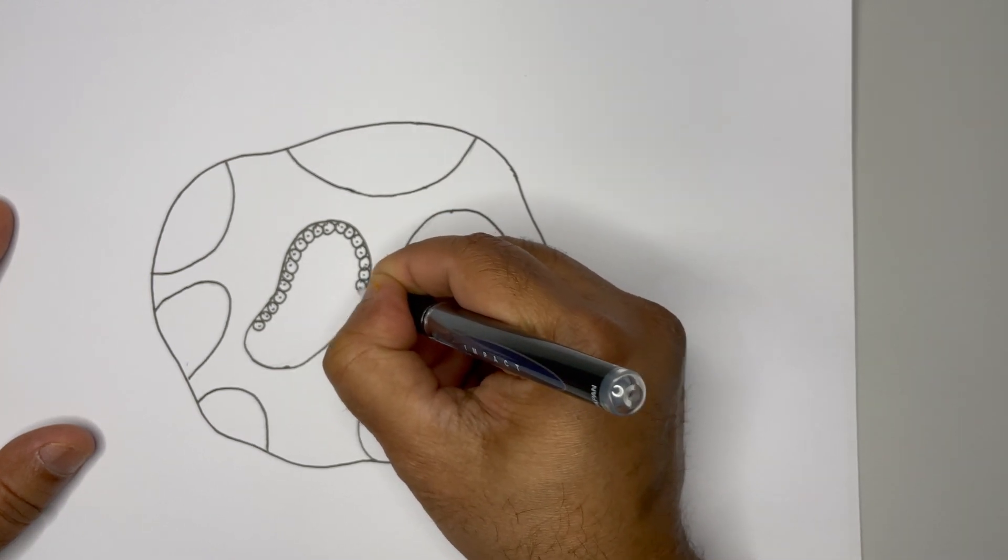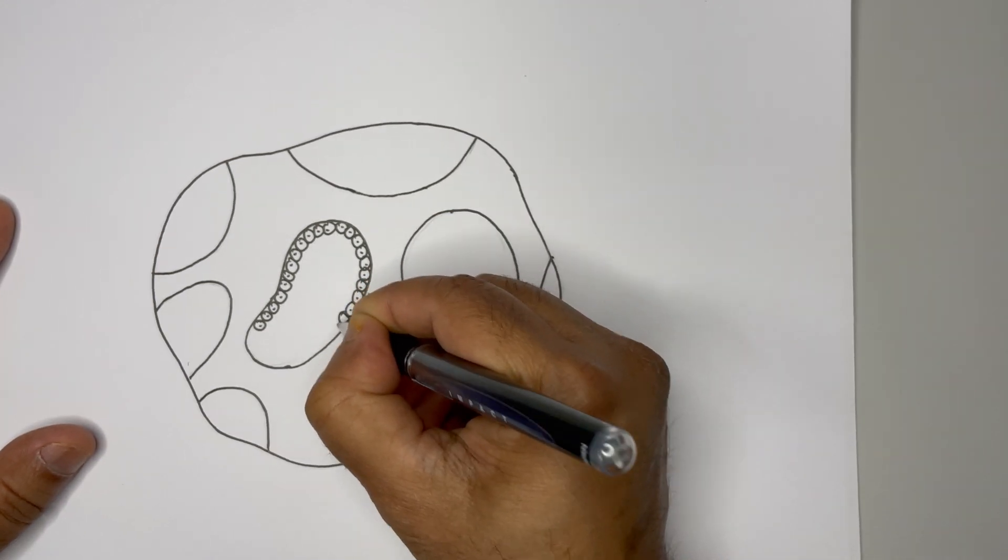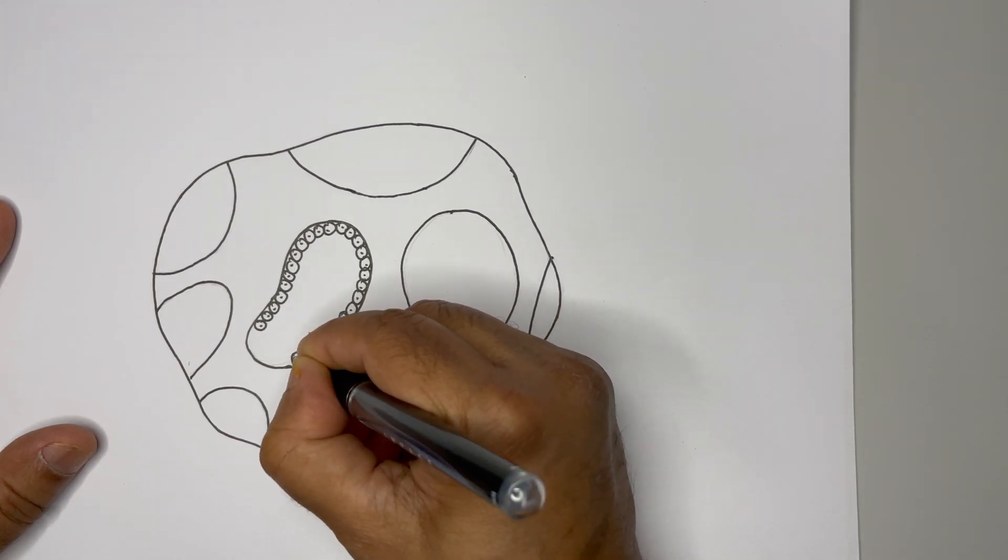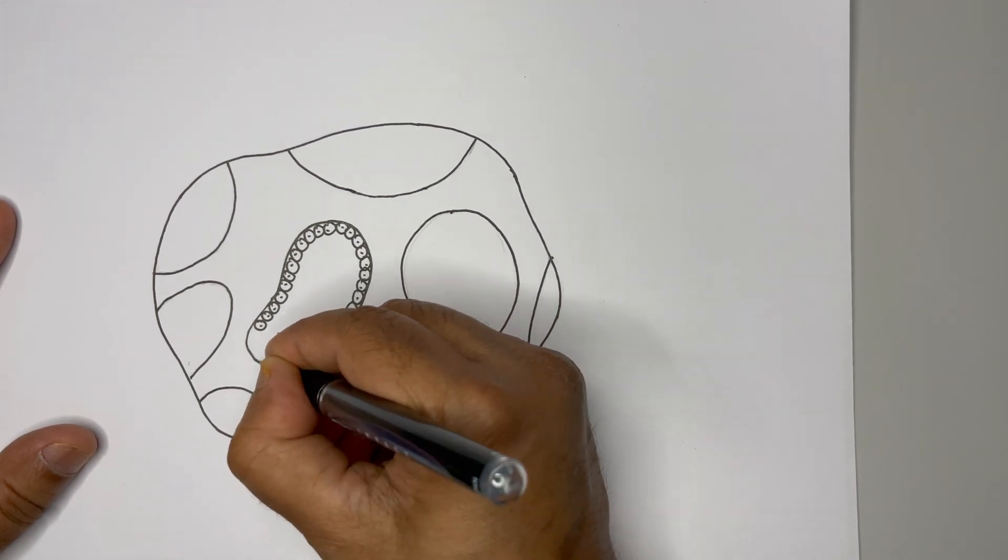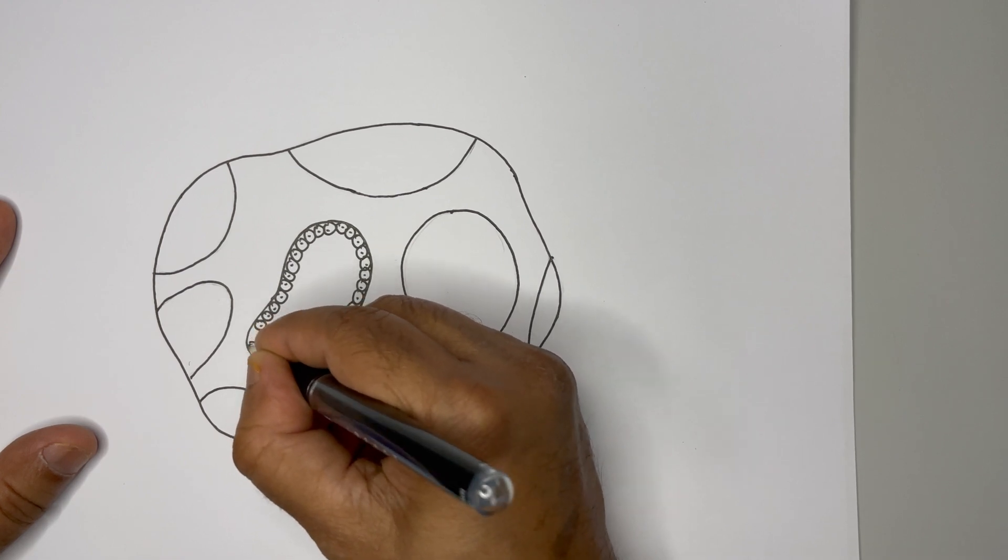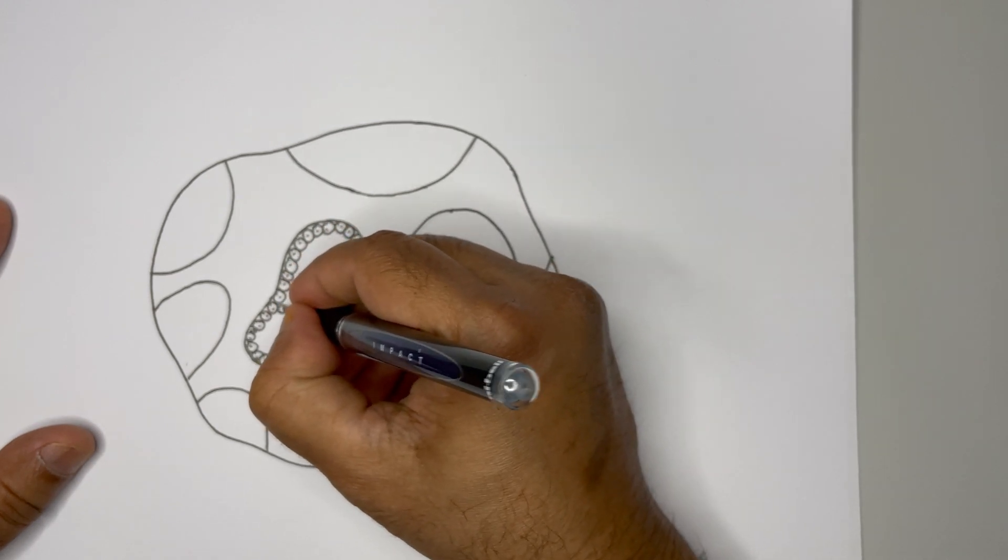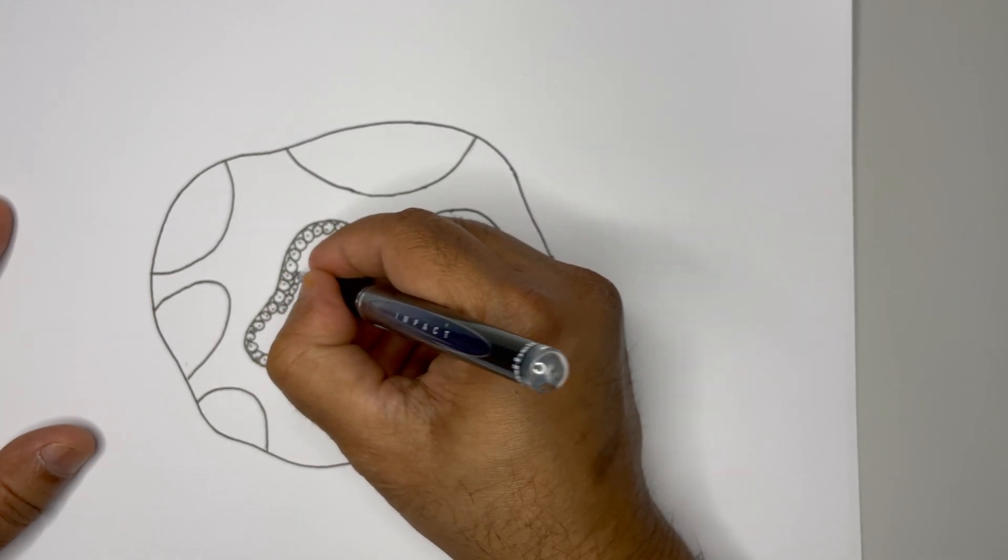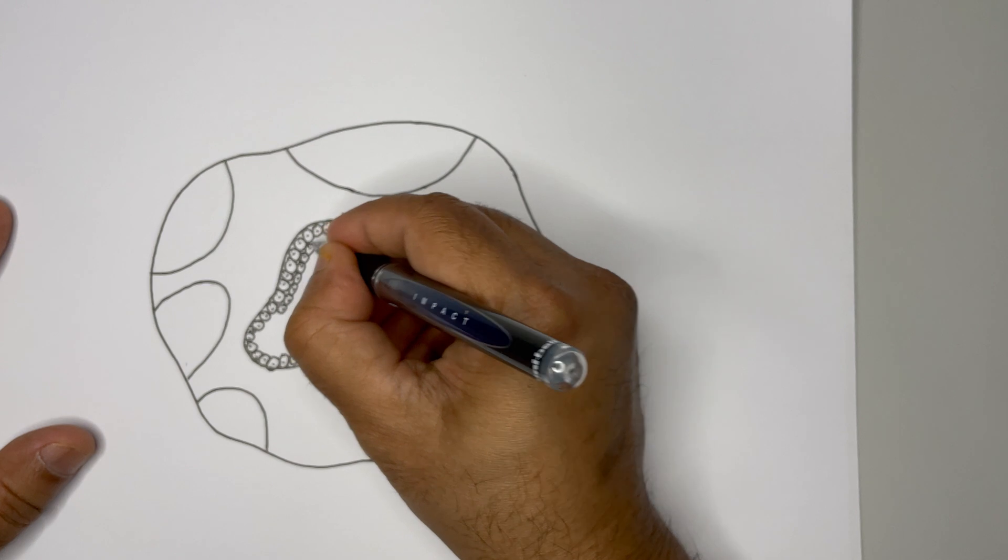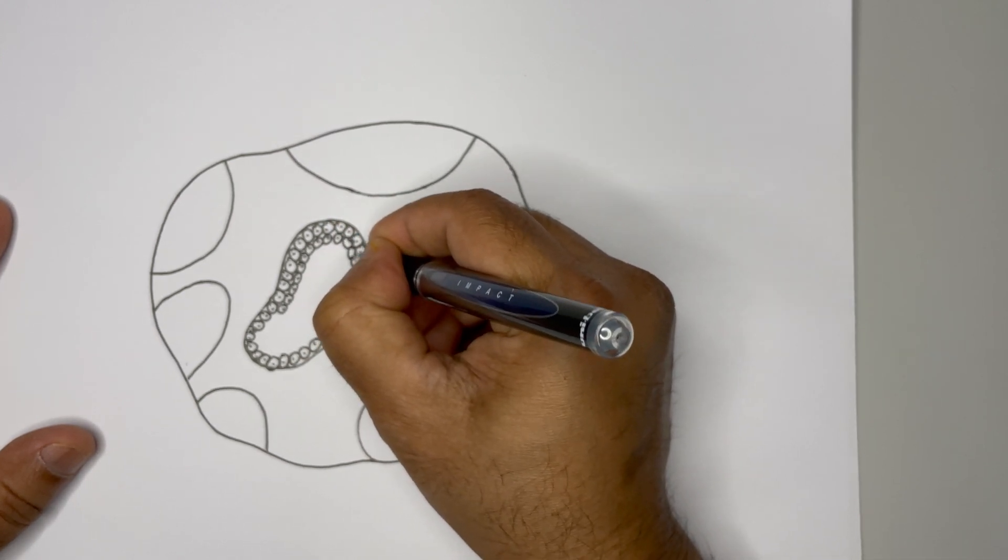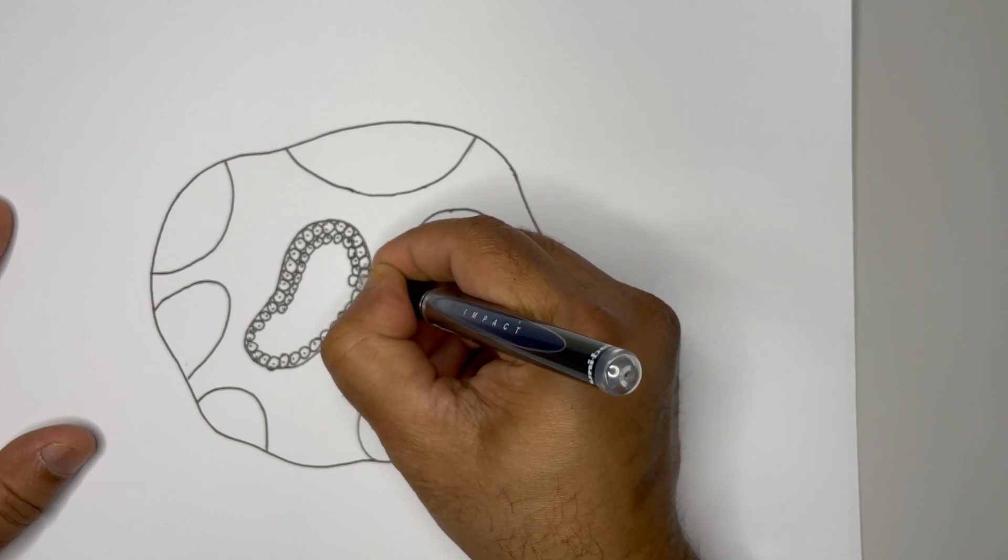They are basically primary spermatocytes. Let us draw one more layer. These cells are called primary spermatocyte, secondary spermatocytes, spermatids.